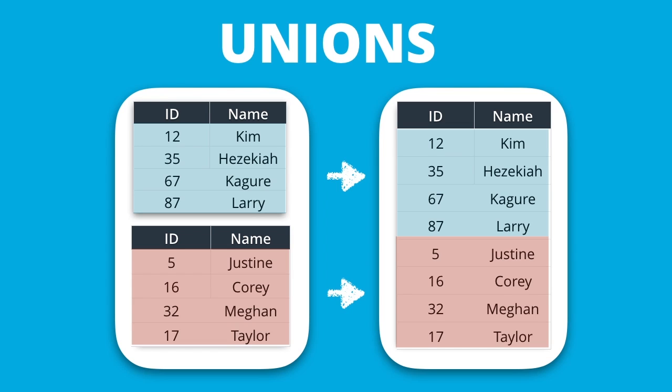Unioning appends multiple data streams into one unified stream. This makes a longer data set containing records from both of the original data sets. Picture stacking records from one file on top of records from another file, making sure to line up the columns or fields that are common between them.